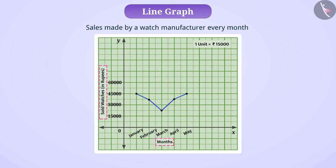Like here, we see that sales have decreased from January to March whereas after March, the sales have increased.